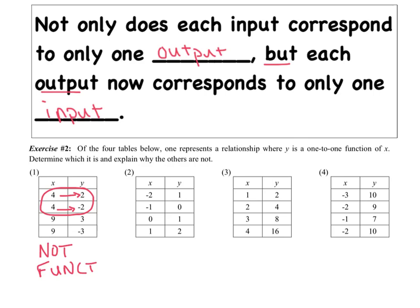On the second table, I want you to compare these two ordered pairs. Yes, this is a function because each input corresponded to one and only one output. However, we had some double dipping on the outputs — the output value 1 got used twice. So even though it's a function, this one is not one-to-one because of the repeated output values.